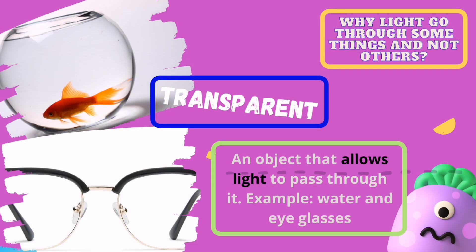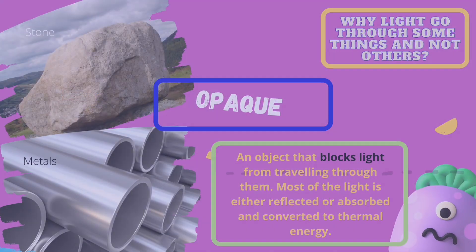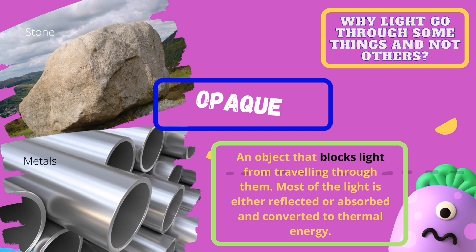There are three types of materials or objects in which light behaves differently. When light encounters an object or material that allows it to pass directly through completely, it is called a transparent object. Transparent objects look clear, like water or eyeglasses. But if light is blocked by an object where most of the light is either reflected or absorbed and converted to thermal energy,